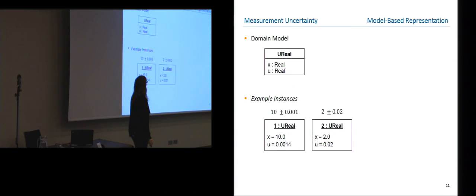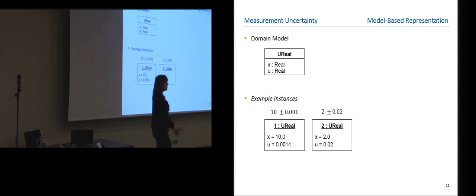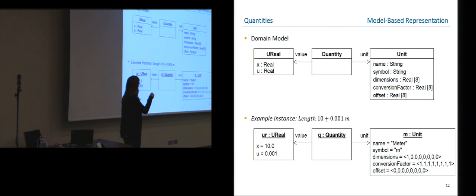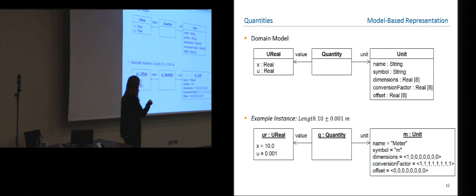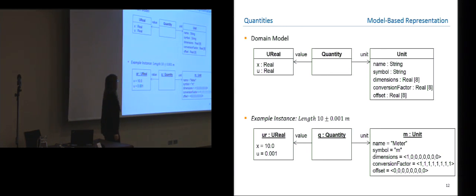A model-level representation of uncertainty would be a class UncertainReal with two real values — one for X and one for U. Having these two classes, we have everything together to represent quantities. So a quantity has a unit and an associated uncertain real value. We can use this class to represent quantity values — for example, a length of 10 ± 0.001 meters.